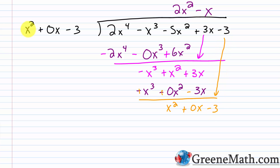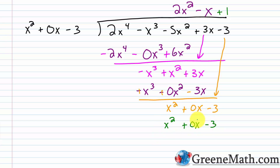Leading term into leading term: x squared over x squared is 1, so I put plus 1. Multiply: 1 times x squared is x squared, 1 times 0x is 0x, and 1 times negative 3 is minus 3. Subtracting the same thing from itself gives 0: x squared minus x squared is 0, 0x minus 0x is 0, and negative 3 plus 3 is 0. So there's no remainder. Our answer is 2x squared minus x plus 1.